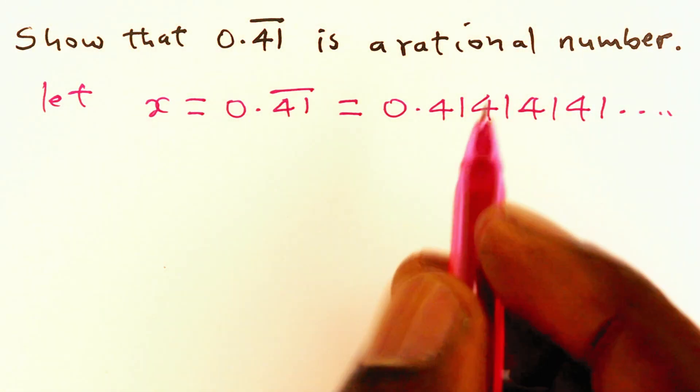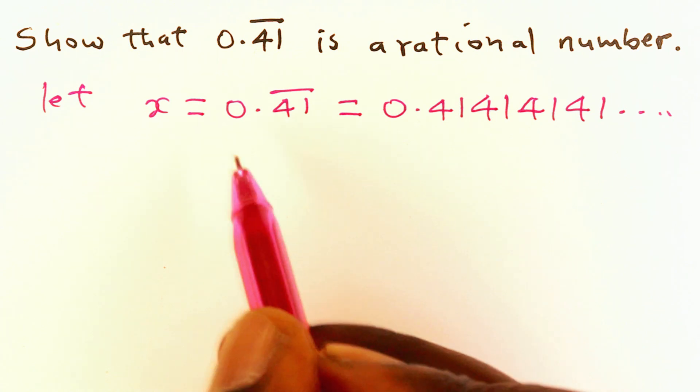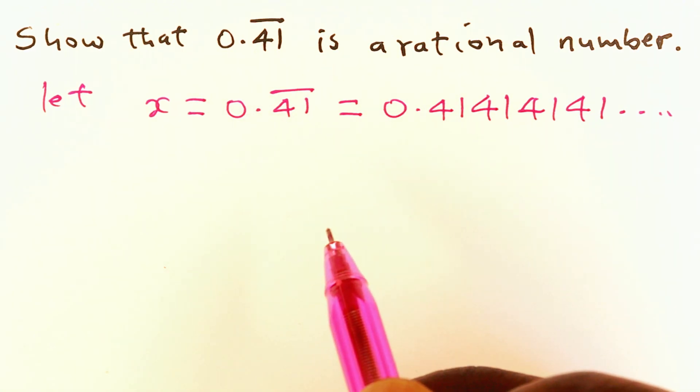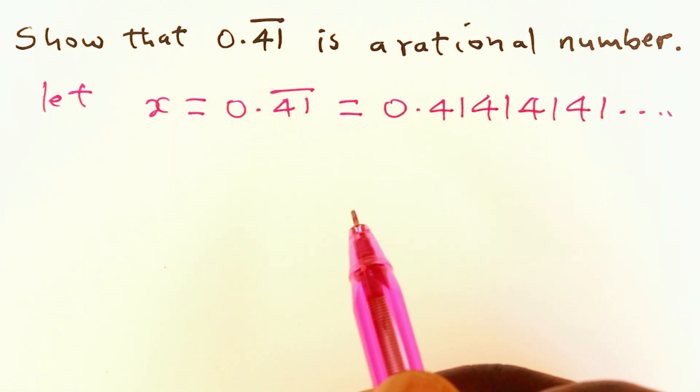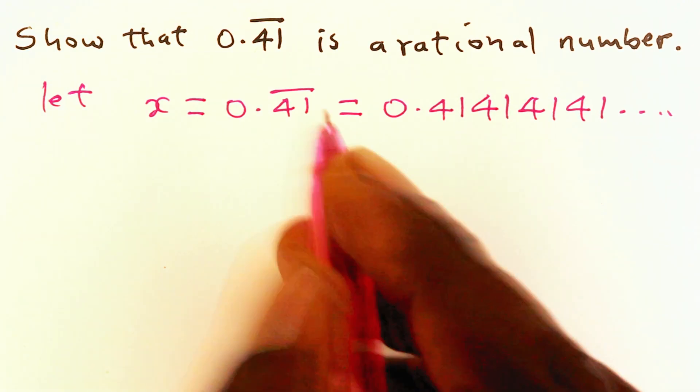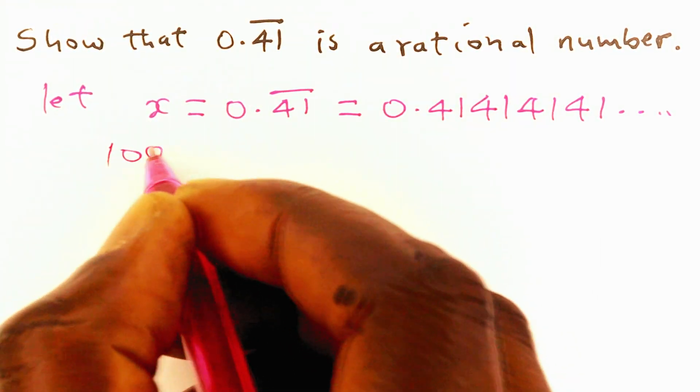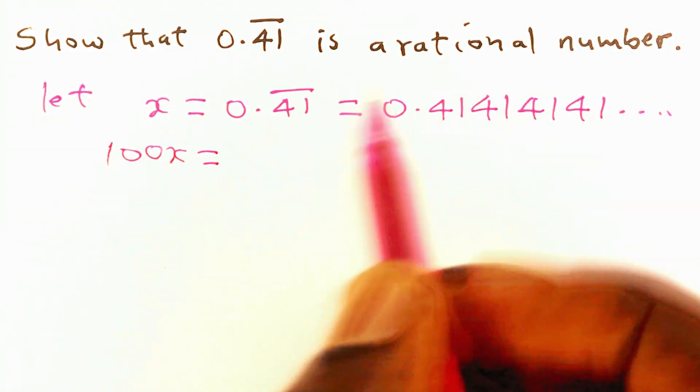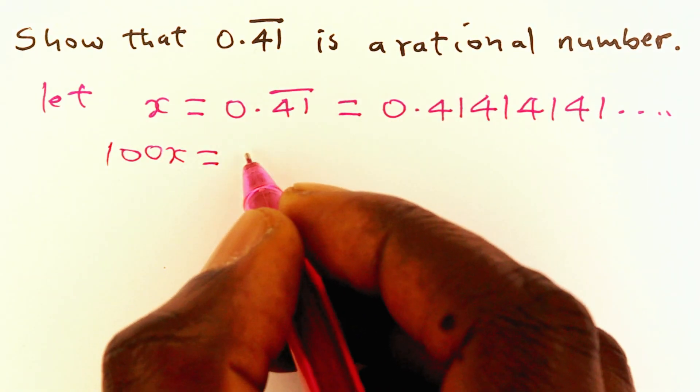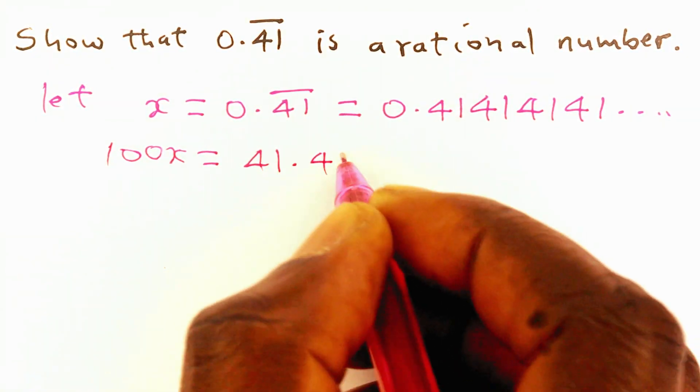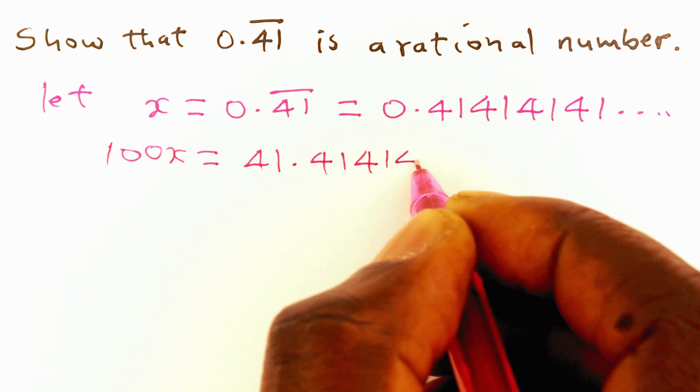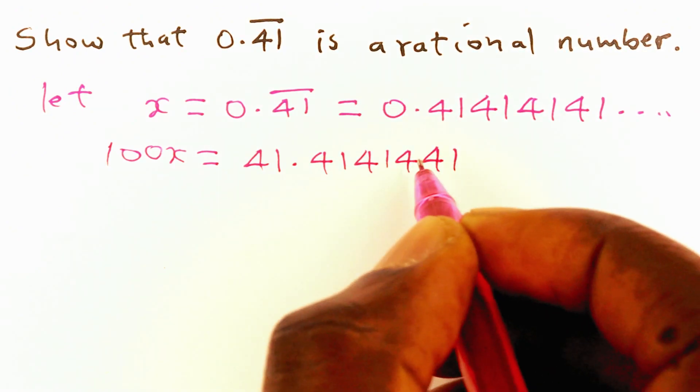Because there are two numbers recurring, we can multiply x by a base 10, which has got two zeros. So that is 100x. When we multiply x by 100, we're going to get 41.41 recurring.